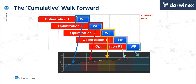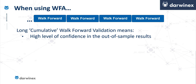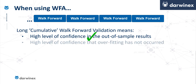In fact, in this example with five stages and an optimisation to walk-forward ratio of three to one, the cumulative walk-forward duration is actually five-eighths of the entire period. This much longer validation period gives us a much higher confidence in the out-of-sample results, and also means that it gives us confidence that overfitting has not occurred.